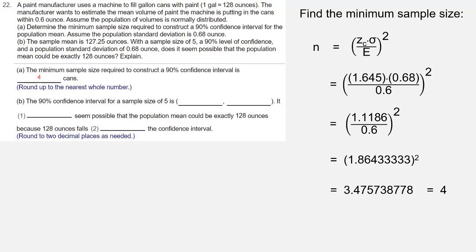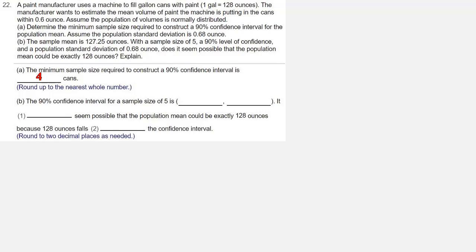So the minimum sample size here is going to be 4. With a sample of size 5, we have at least 4 individuals, so we can proceed to part B. Now we're finding the confidence interval. To find the confidence interval, we need to find the error.